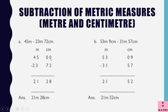Let us subtract. 10 minus 2 is 8. 9 minus 7 is 2. 4 minus 3 is 1. And 4 minus 2 is 2. So we have 21 meters 28 centimeters.